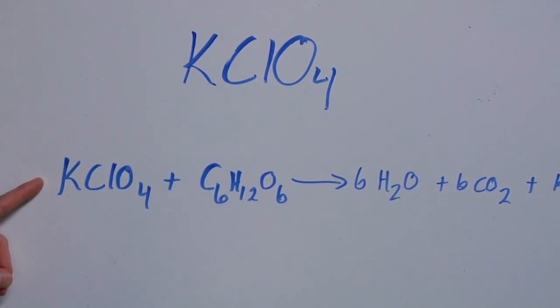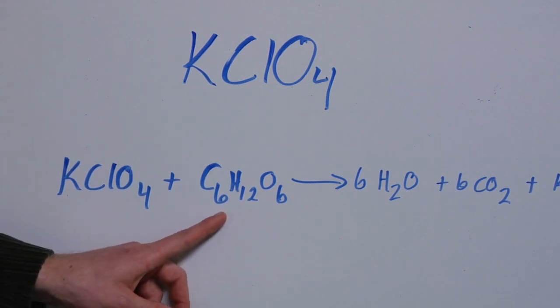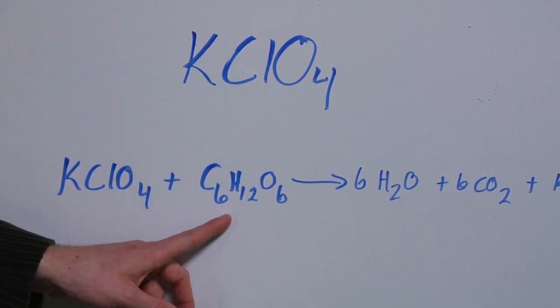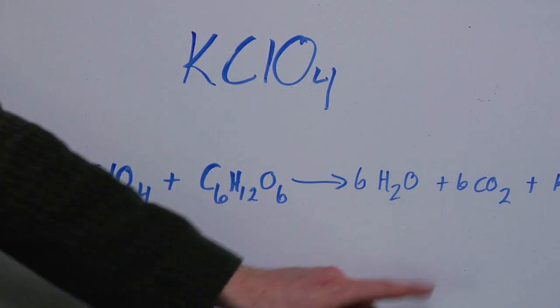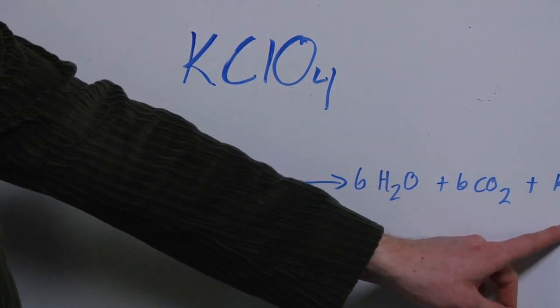In a common reaction, potassium perchlorate reacts with glucose, so C6H12O6, that's just glucose, the sugar, and it makes water, carbon dioxide, and potassium chloride.